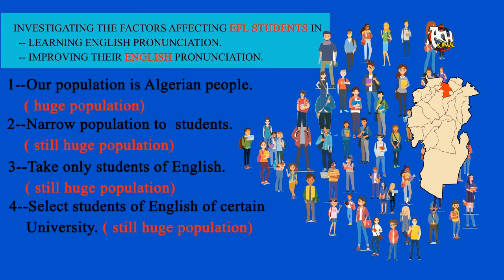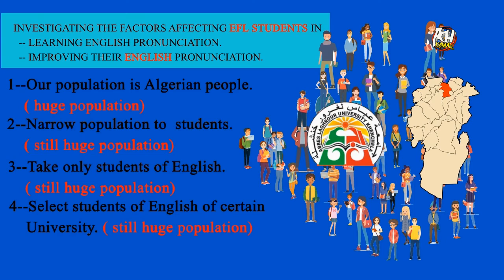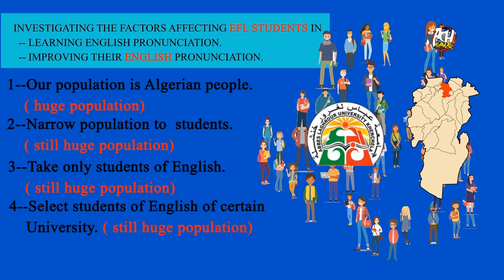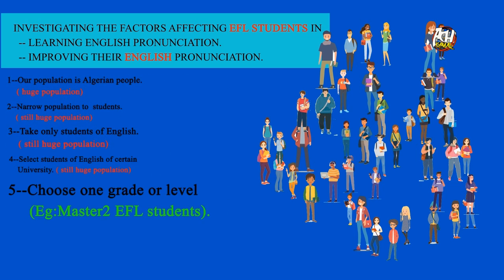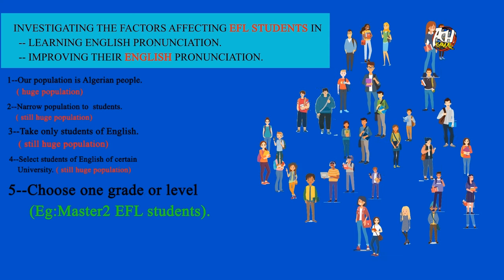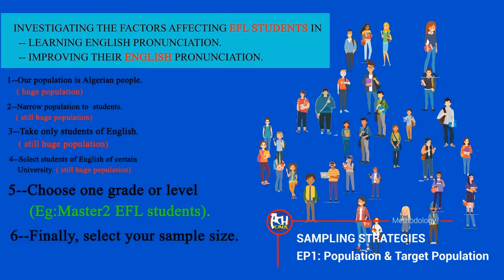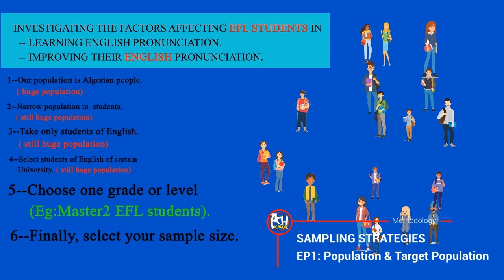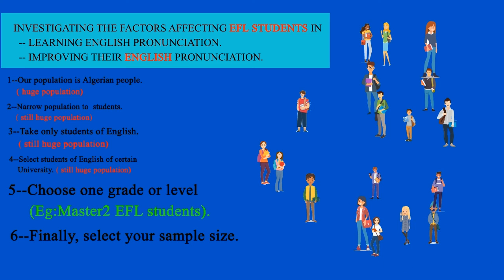So we will choose students from certain universities — for instance, University of Basel-Huror — and from within that, we will focus only on one grade or level, such as first year, second year, third year, Master 1, or Master 2 EFL students. Focusing on Master 2, for example, gives us our target population. Finally, we will select a group of representatives as a sample size, and we will learn how to determine the sample size in the next video, as well as the sampling techniques.